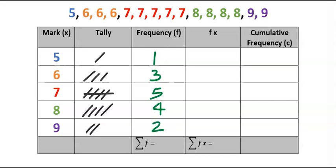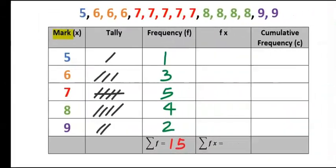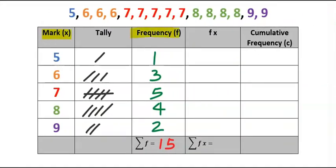Next, sum all the numbers: 1 + 3 + 5 + 4 + 2 is a total of 15. Next, the class mark multiplied by the frequency. Let's start with 5 × 1 = 5. Next, 6 × 3 and here we got 18. Next, 7 × 5, we got 35.